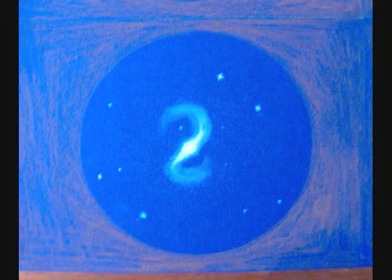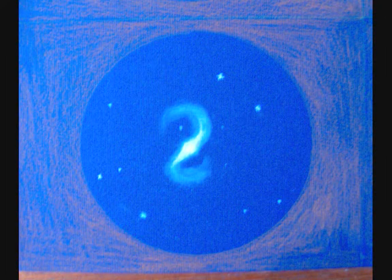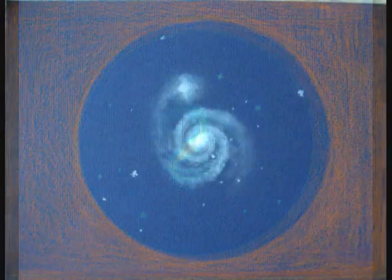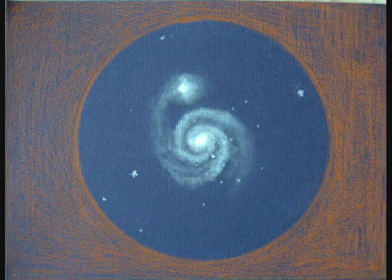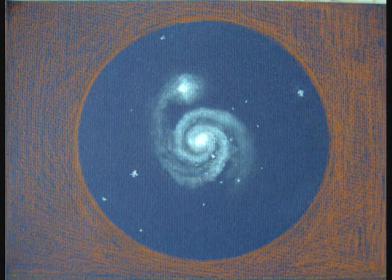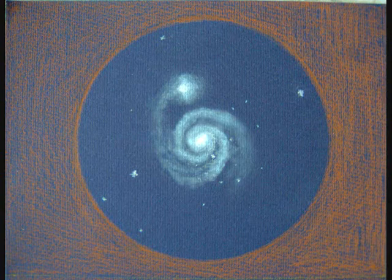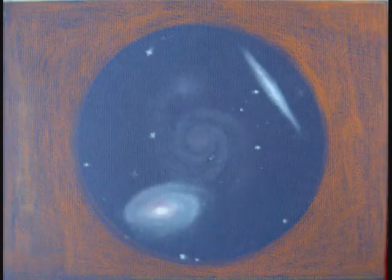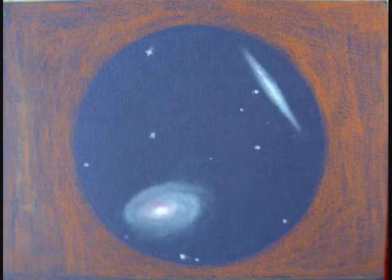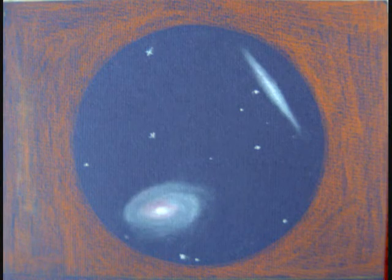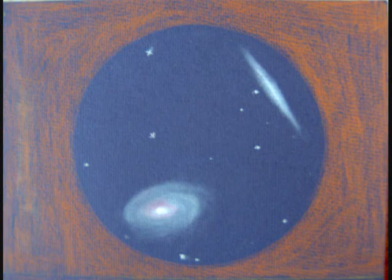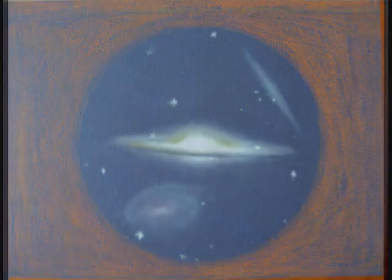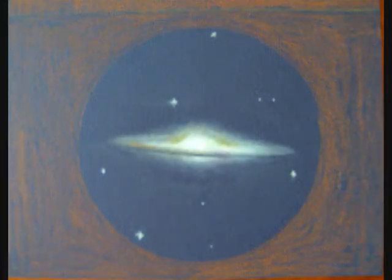It has always amazed me that the further we look out into deep space, the further back in time we see. When we observe galaxies that are hundreds of thousands of light years away, we are seeing them as they were hundreds of thousands of years ago. This process must work in reverse, and any alien life forms observing from one of these galaxies would see our own Milky Way galaxy as it was hundreds of thousands of years in the past.